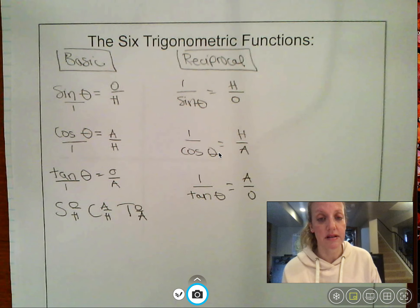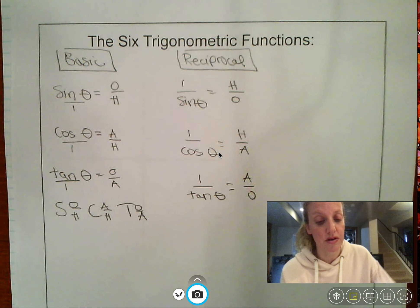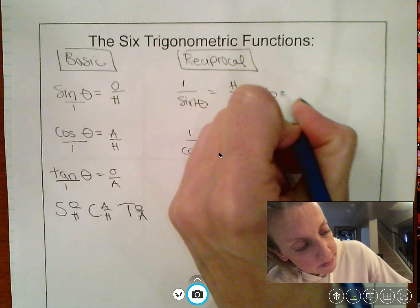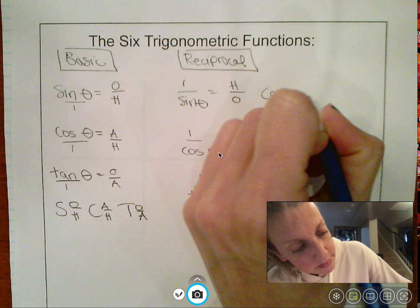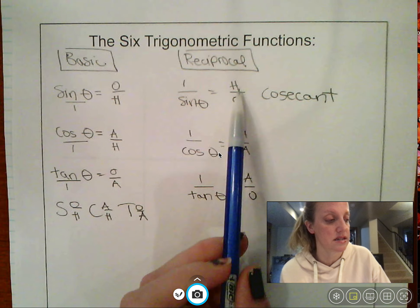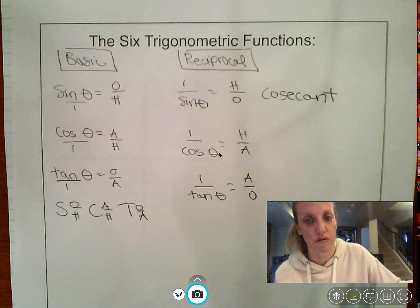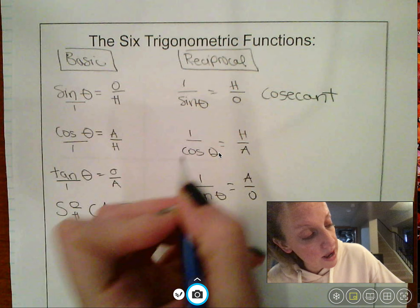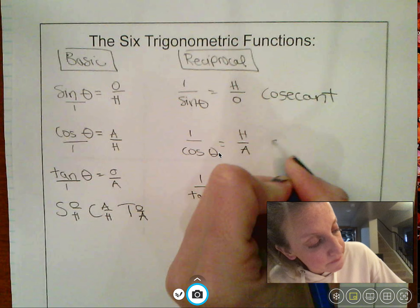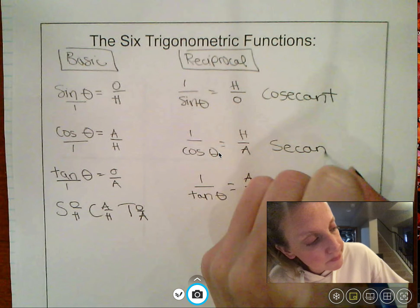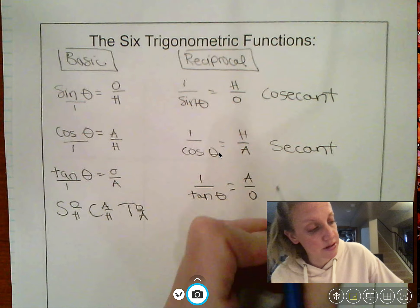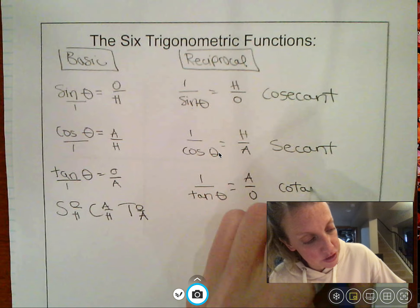Some vocabulary worth knowing: one over sine of theta is called the cosecant, so cosecant is hypotenuse over opposite. One over cosine — the reciprocal of cosine — is called secant. And the reciprocal of tangent is called the cotangent.